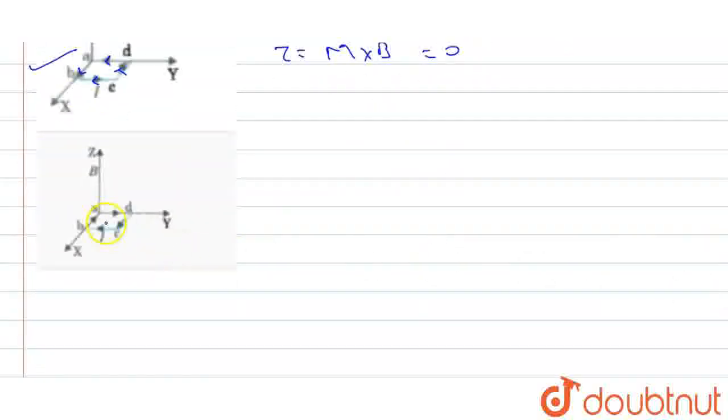Yahan pe dekho, magnetic moment ka direction jo hai niche downward hai, aur magnetic field upar mein hai. Yahan pe bhi kya ho raha, torque M b sin theta, sin 180 degree bhi zero ho raha.